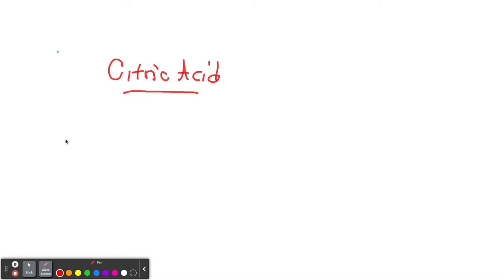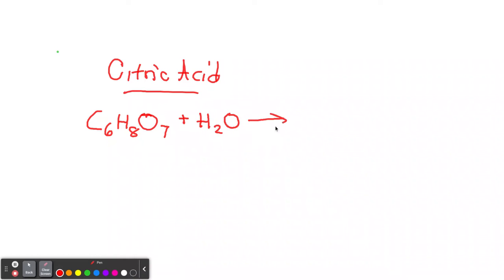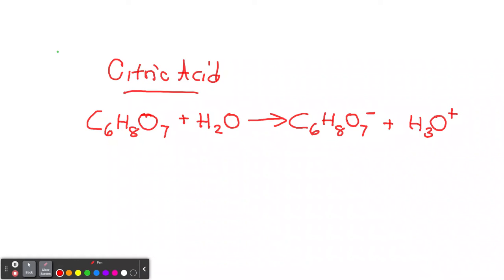Let's look at an acid we're all familiar with: citric acid, found in lemons and oranges. The formula for citric acid is C₆H₈O₇. Of course, for acids to be useful, they need water. This will yield a negative ion — our 6 carbons, 8 hydrogens, 7 oxygens as a negative ion — plus hydronium, our positive ion. The pattern is that all acids have hydronium: a negative ion and a positive ion. And all acids need water to be useful — without water, they're useless.